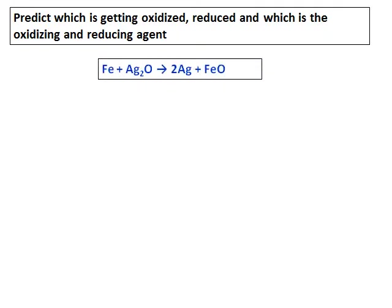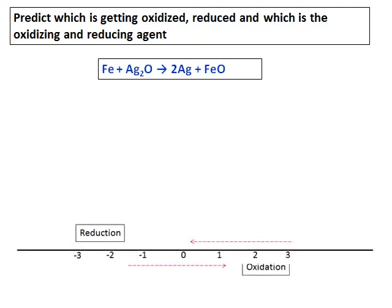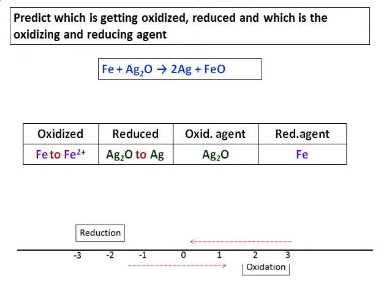One more example: when iron reacts with Ag2O to give Ag plus FeO. Referring to the number line, Fe is becoming Fe2+ — the oxidation number going from 0 to positive 2 — therefore it is going more towards the positive side and is oxidized. For silver, it is going from positive 1 to 0 — hence it is going towards the reduction side and is reduced. Ag2O is the oxidizing agent and Fe is the reducing agent.